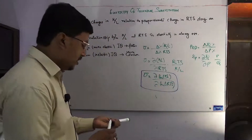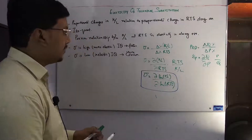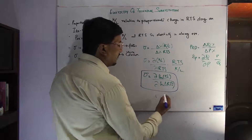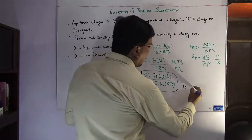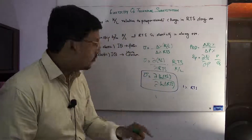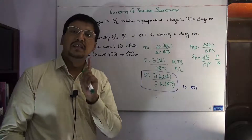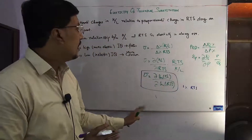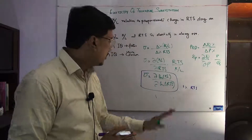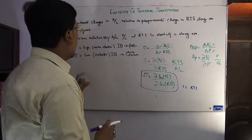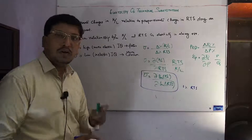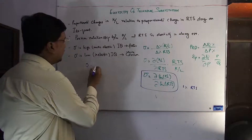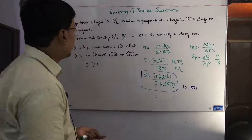Now we discuss two more important things for the interpretation of elasticity of technical substitution. We are saying: if there is a 1% change in RTS, how much change will occur in the capital-labor ratio? That is the elasticity, and this concept applies generally to all production functions. If the answer is greater than 1, it is more elastic.